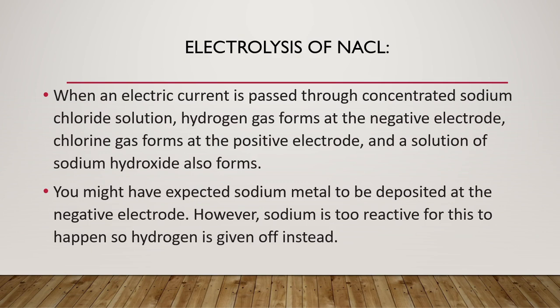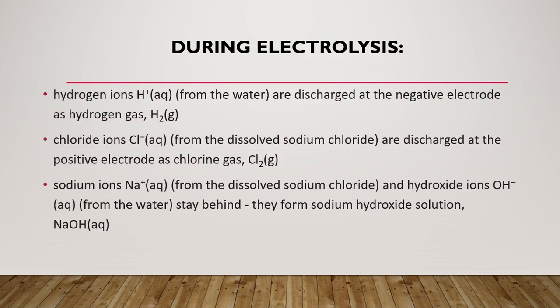You might have expected sodium metal to be deposited at the negative electrode; however, sodium is too reactive for this to happen, so hydrogen is given off instead. During electrolysis, hydrogen ions (H⁺) are discharged at the negative electrode as hydrogen gas. Chloride ions are discharged at the positive electrode as chlorine gas. Sodium ions and hydroxide ions stay behind and form sodium hydroxide solution.